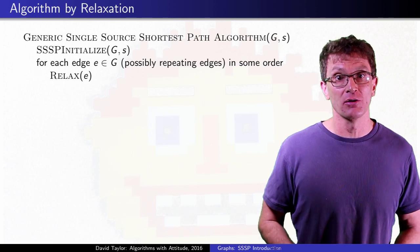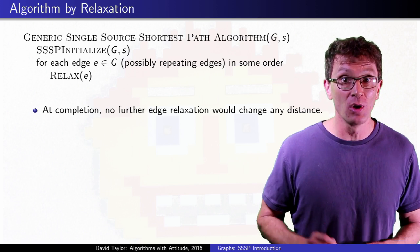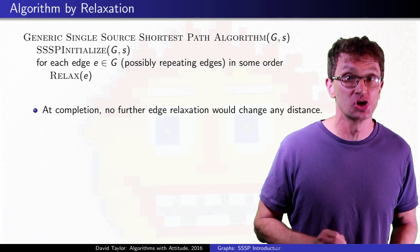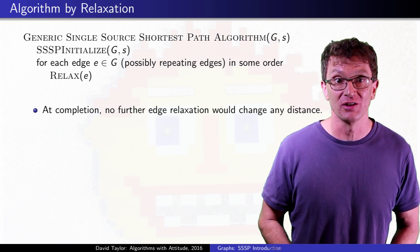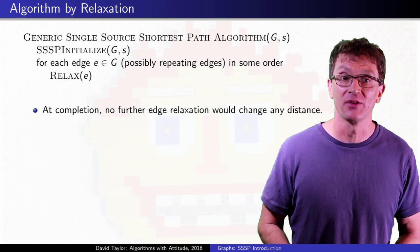At the end of the algorithm, relaxing any edge in the graph won't change any distance estimates. That will happen exactly when all of the distances are the correct shortest path lengths. No relaxation to a vertex will change the vertex's value if it has its actual shortest path distance.